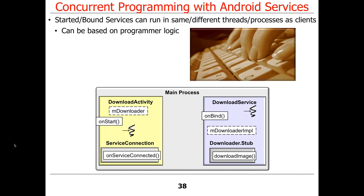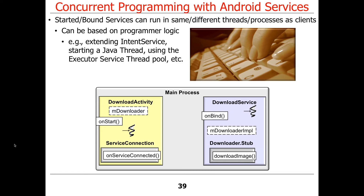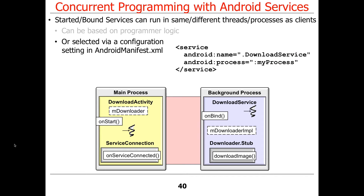You can handle concurrency based on programmer logic by writing code that spawns threads. Options include: IntentService, which has a background thread that processes intents in a thread different from the main thread; starting a Java thread, which you can do for assignment four; or using an executor service thread pool. Alternatively, you can select settings by tweaking the Android manifest file — an example of configuration-driven flexibility, which gives more flexibility without writing the code yourself.